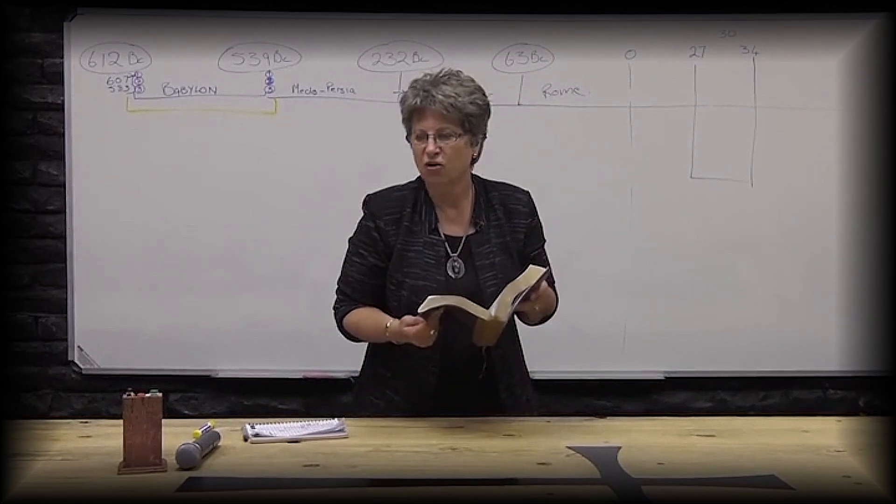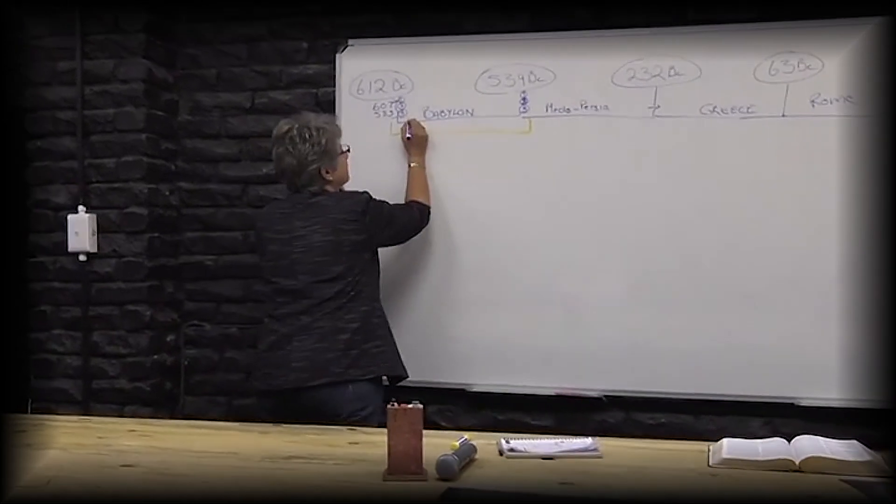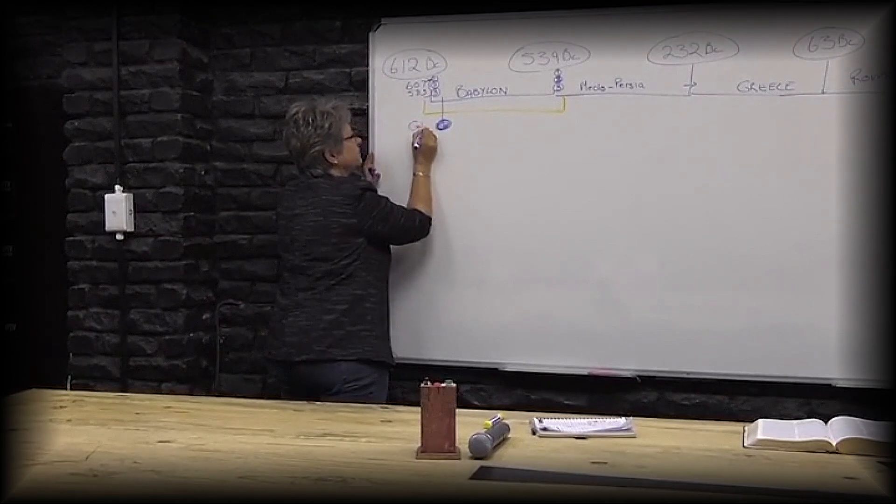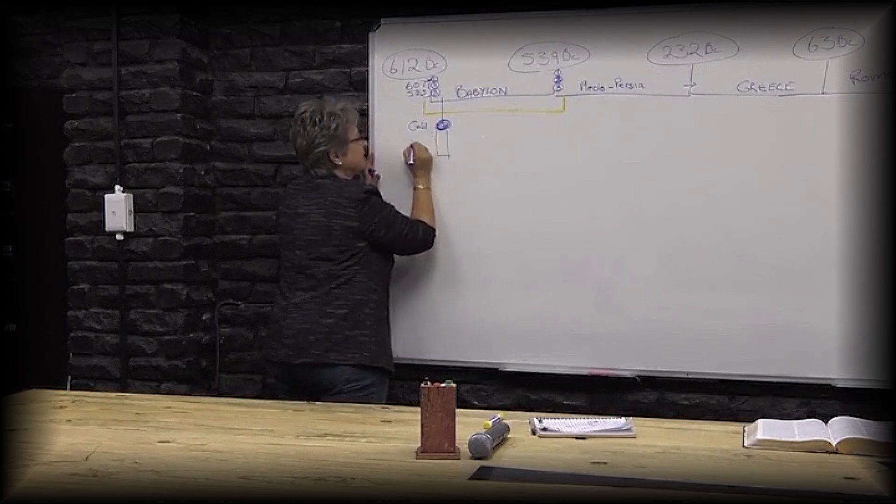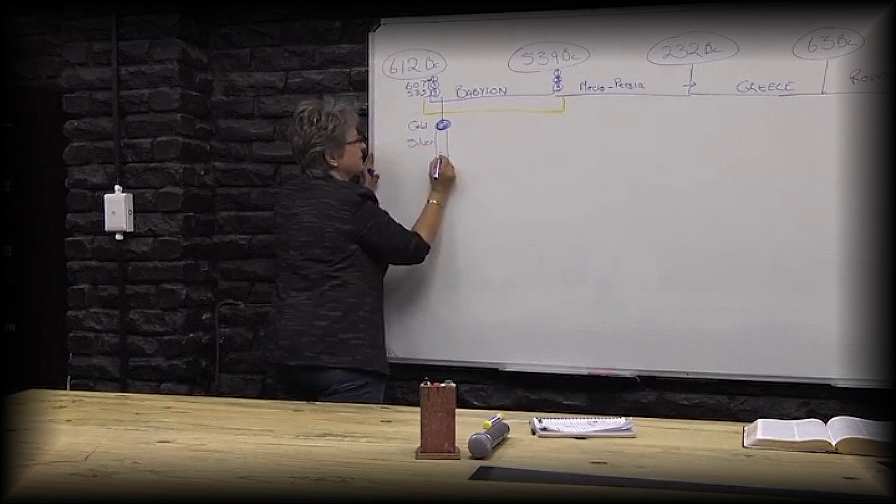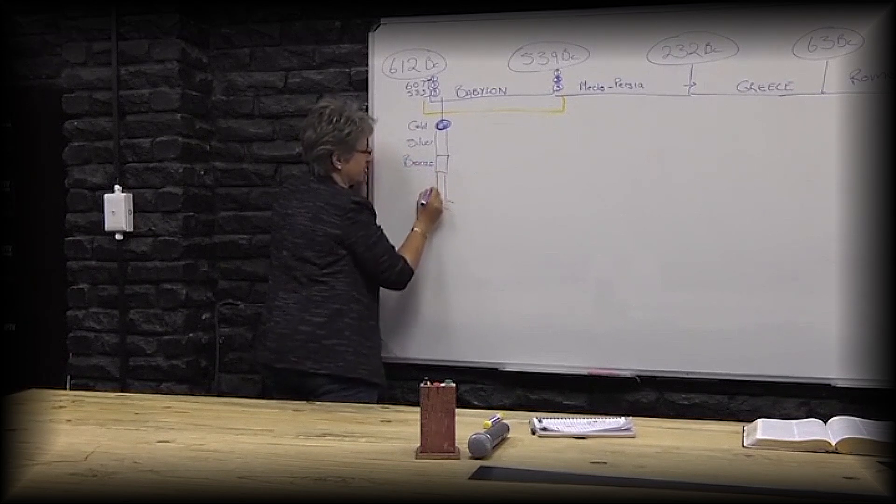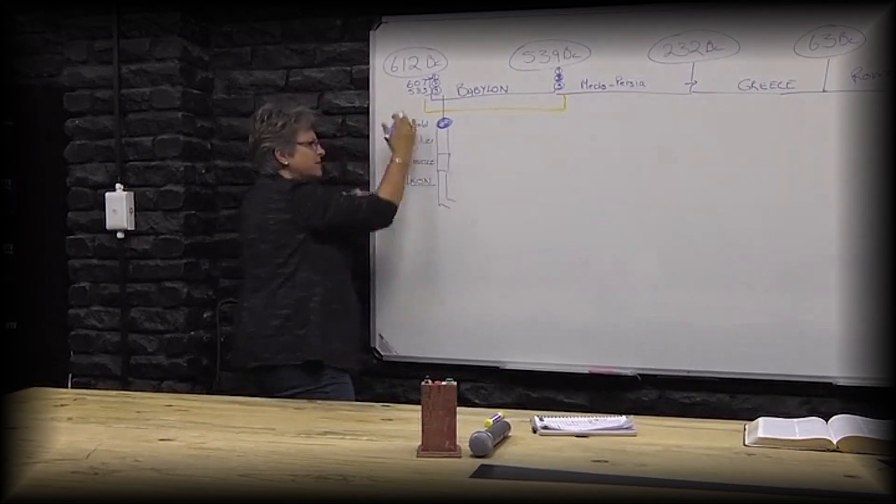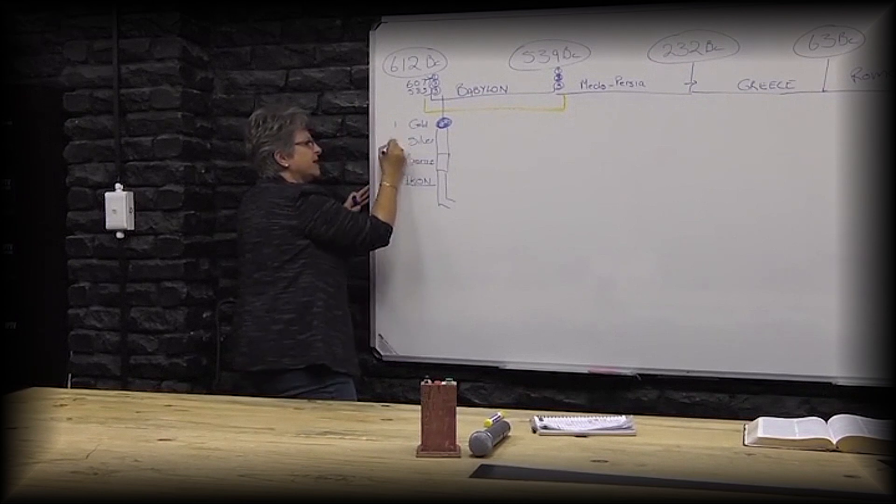He had a dream of a huge statue. First there was a head of gold—everybody say gold. Then there is a breast of silver—everybody say silver, gold. Then there is bronze. And then there are legs of iron. Everybody say iron. Can you see how many parts are there? One, two, three, four. Four meaning the number of the earth, the number of the natural.